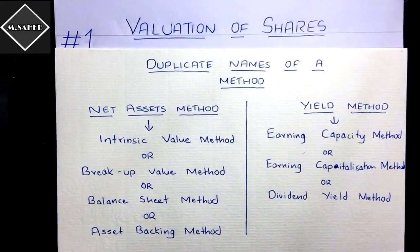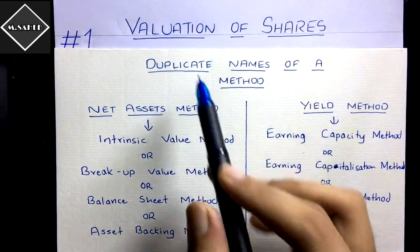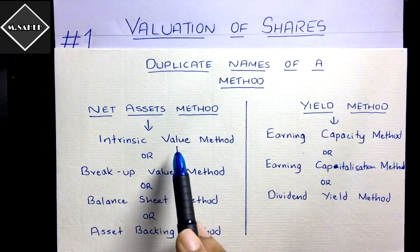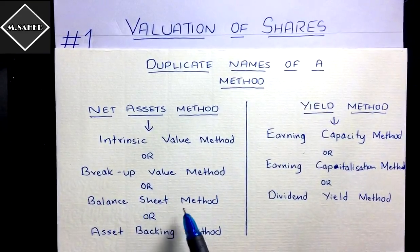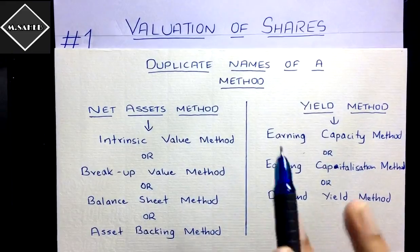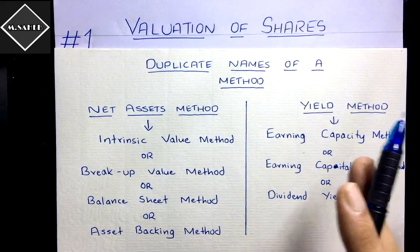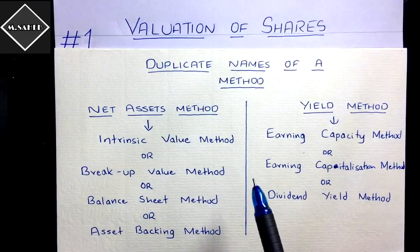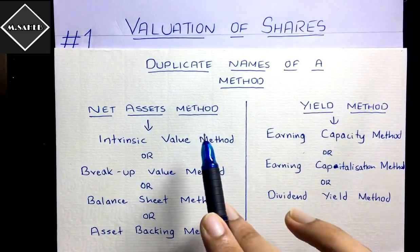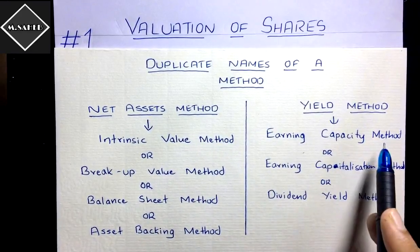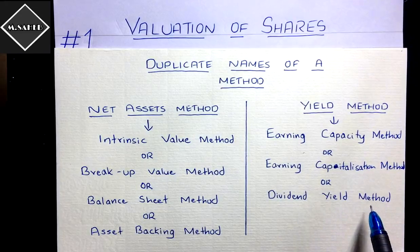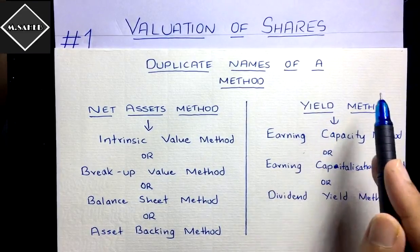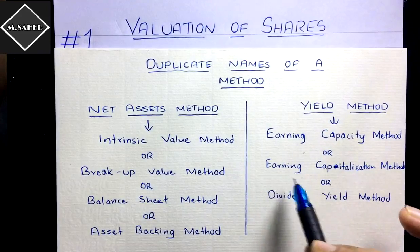One more important thing: there are lots of duplicate names for these methods. The Net Assets Method is also called intrinsic value method, breakup value method, balance sheet method, or asset backing method. Don't be confused in exams — if you see 'breakup value method,' you'll know it means Net Assets Method. The Yield Method is also called earning capacity method, earning capitalization method, or dividend yield method.